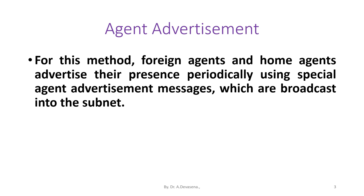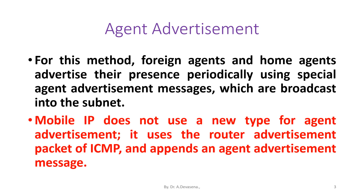For the agent advertisement method, foreign agents and home agents advertise their presence periodically using special agent advertisement messages, which are broadcast into the subnet. Mobile IP does not use a new packet type for agent advertisement; it uses the router advertisement packet of ICMP and appends an agent advertisement message.